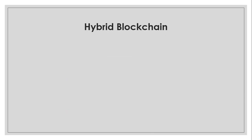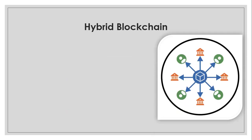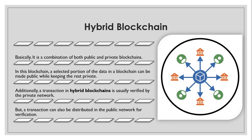Hybrid blockchain is a combination of both public and private blockchain. A selected portion of data can be made public while keeping the rest private. Transactions in a hybrid blockchain are usually verified by the private network, but can also be distributed to the public network for verification. If functionality from both private and public blockchains is required, hybrid blockchain is the appropriate choice.